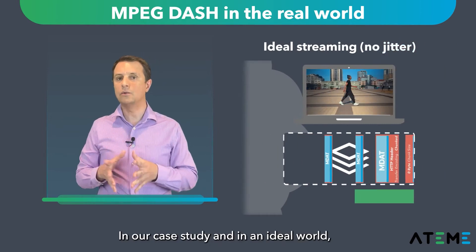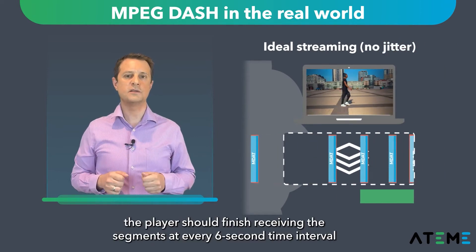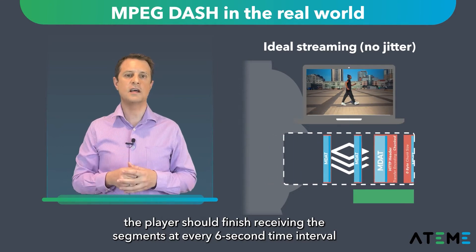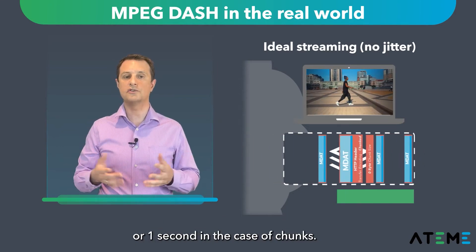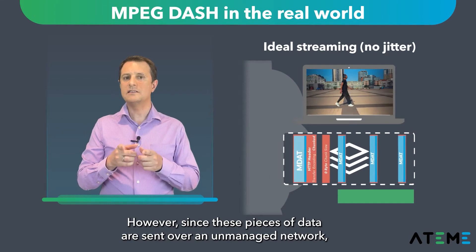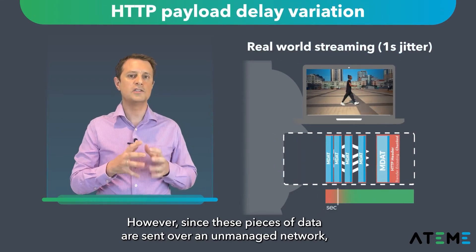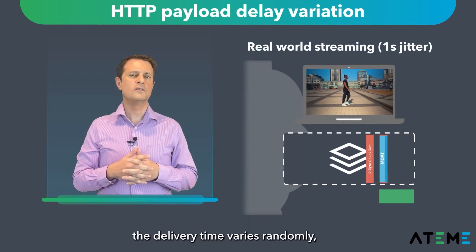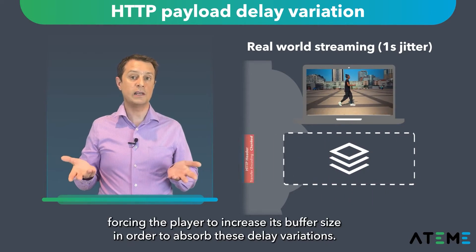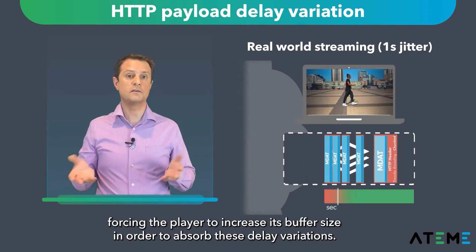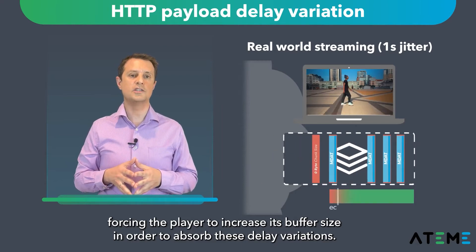in an ideal world, the player should finish receiving the segment at every 6-second time interval, or 1 second in the case of chunks. However, since these pieces of data are sent over an unmanaged network, the delivery time varies randomly, forcing the player to increase its buffer size in order to absorb these delay variations.